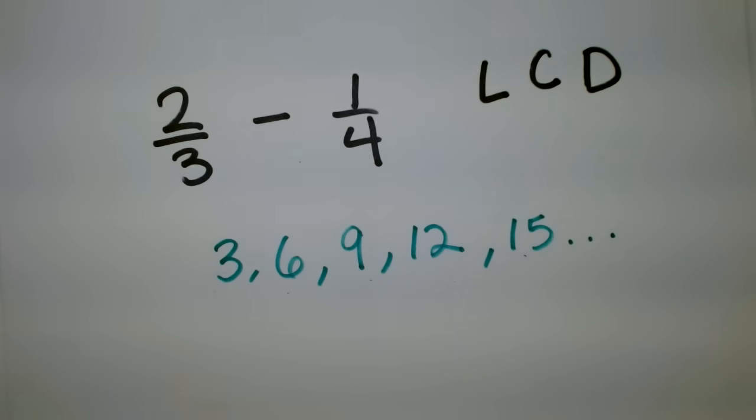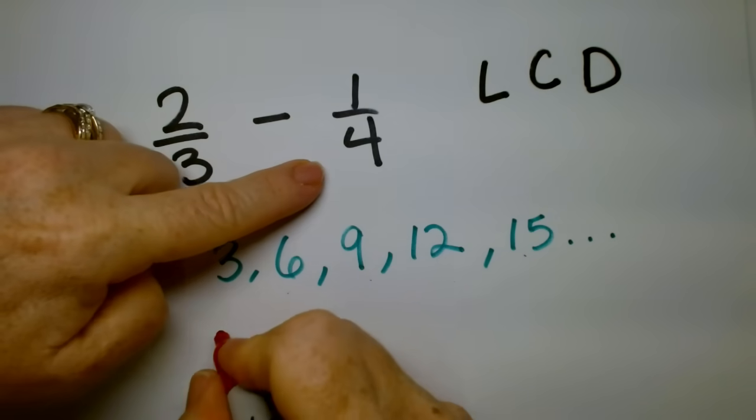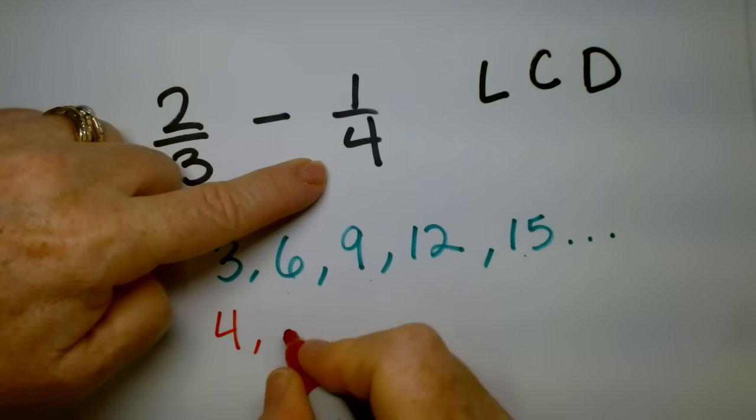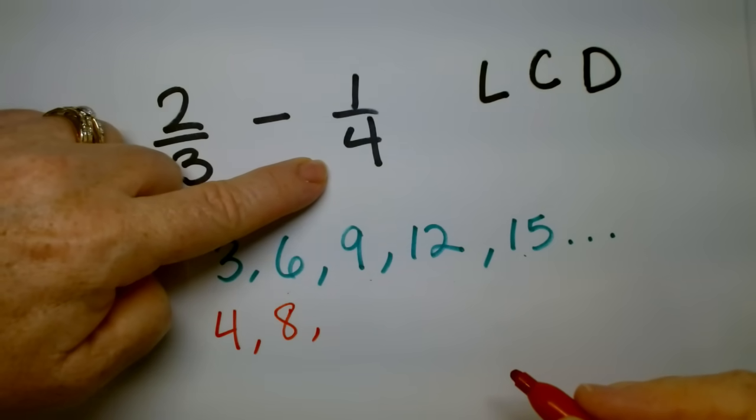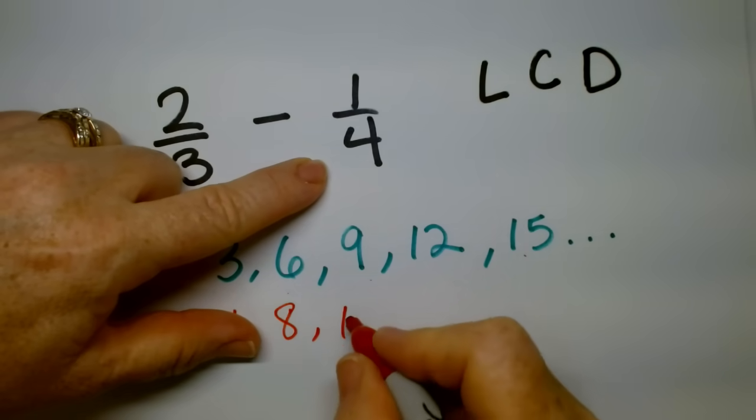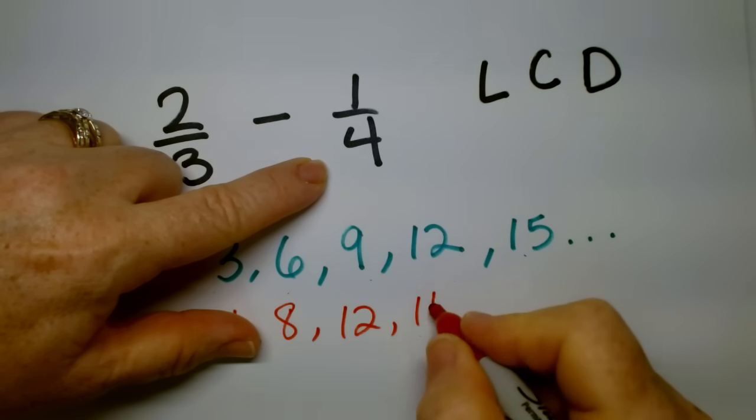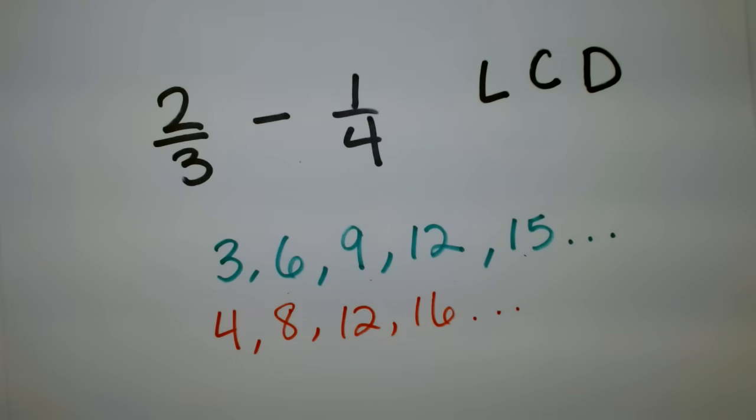Can you help me count by fours? Four, and then four plus four is eight. Eight plus four is twelve, then sixteen, and it goes on. Do you see any that match? Yeah, which ones match? The twelve.